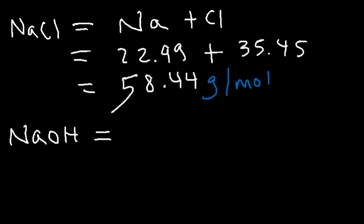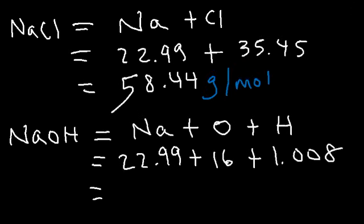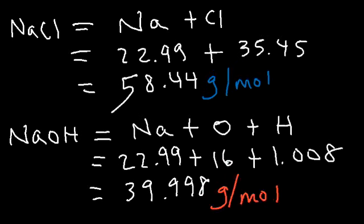Now what about sodium hydroxide, NaOH? So we have one sodium atom, one oxygen, and one hydrogen. The atomic mass for oxygen is 16, and for hydrogen, it's 1.008. So we just got to add these three numbers. And you should get 39.998, which you could round to 40 if you want. So that's the formula weight for sodium chloride and sodium hydroxide, which is the same as the molar mass.